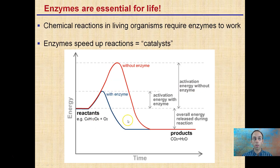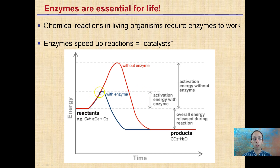For chemical reactions in living organisms, you require enzymes to do work — enzymes speed up or catalyze reactions. The red line here shows the reactants and the amount of energy required without enzymes. This is the activation energy without an enzyme producing the end products. In the presence of enzymes, the amount of activation energy is greatly reduced. Not only is the energy reduced, but the time to produce the end products is also reduced — less energy required and a quicker time to produce end products.